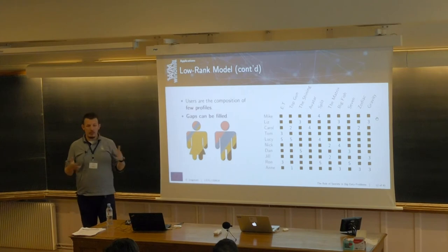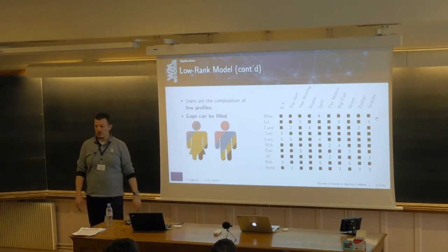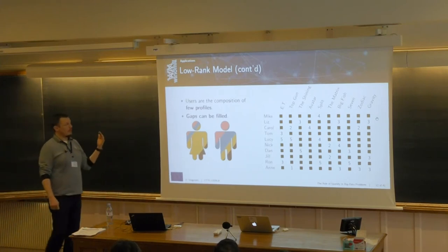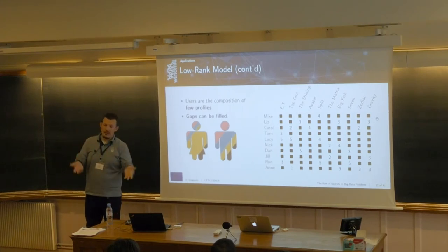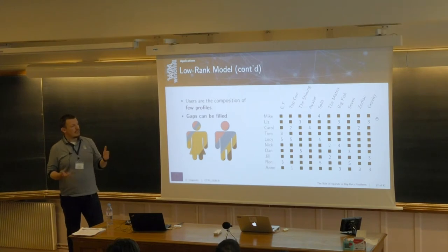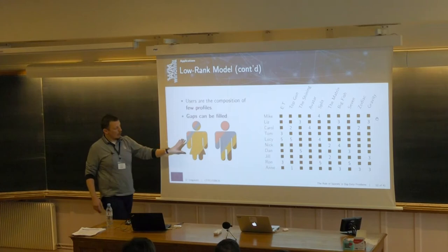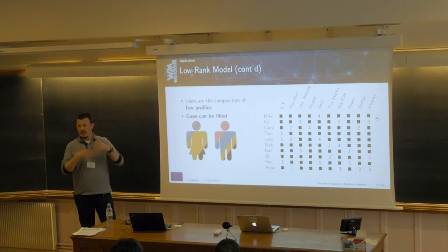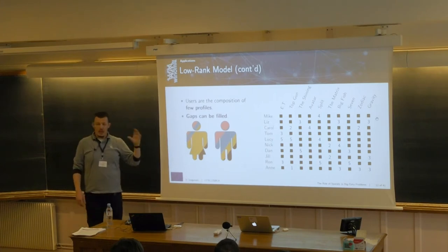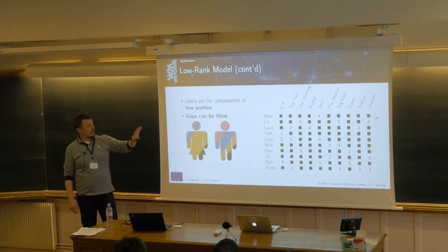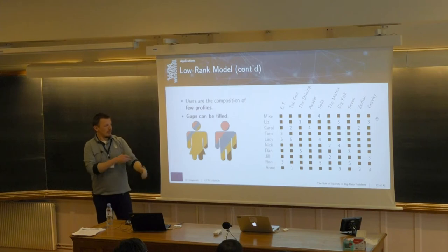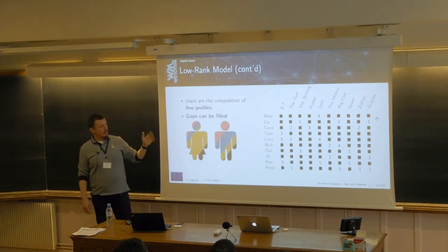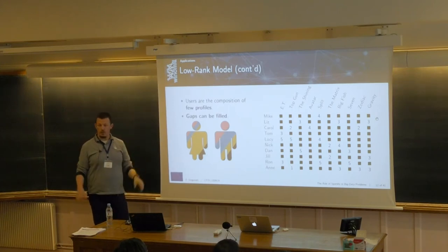The second problem is the famous Netflix problem. We have a set of users who watch movies and give ratings, and we want to predict whether a user will like a new movie. The key idea is that all users can be represented as a combination of very few profiles derived from analyzing movies. To characterize a user, only a small number of movies suffice — enough to determine their profile according to the main modes of the system — and we don't need ratings for all movies.